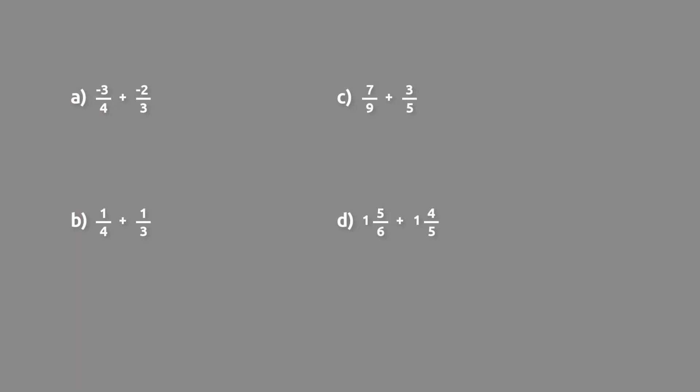Preferably the least common denominator. For part A with negative 3 fourths and negative 2 thirds, what is the least common denominator — or least common multiple — of 4 and 3? That would be 12. To get 12 with the first value, we multiply by 3 over 3: negative 3 fourths times 3 over 3 equals negative 9 twelfths.